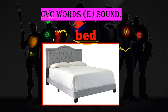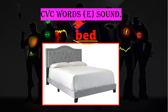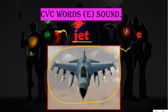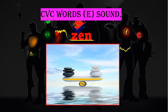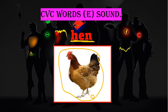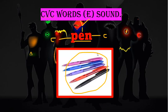Thank you so much, class! I hope you learned something today. Next time we will have questions and responses. To review: we learned bed, red, jet, leg, den, zen, men, hen, ten, and pen — these are CVC words with the short vowel E sound. Thank you so much and have a good day, bye!